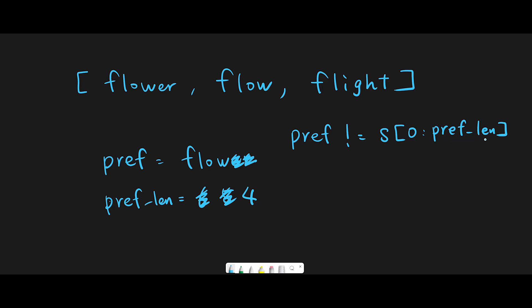The reason we use prefix length as the slice bound is that between flower and flow we found flow as the longest common prefix — length four. So even if a new word is coming, we definitely won't have a longest common prefix longer than four. That's why we don't need index five or six. In Python we don't include the end index, so from zero to four gives us indices zero, one, two, three.